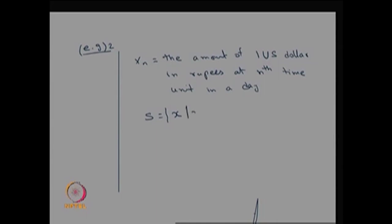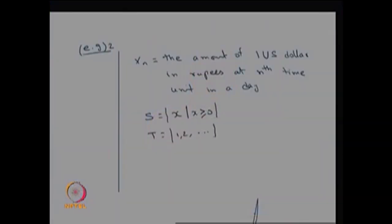Therefore, the possible values of x are greater than or equal to 0, and T — the time unit, whether every minute, every 5 minutes, or every hour — forms a countably finite or countably infinite set. Therefore, this stochastic process forms a discrete time, continuous state stochastic process.